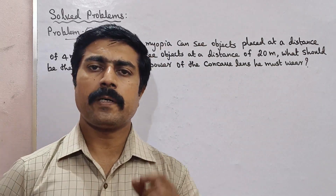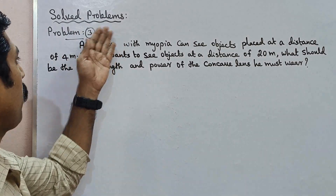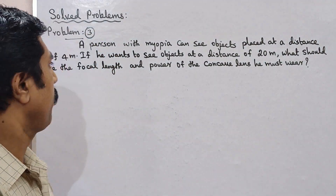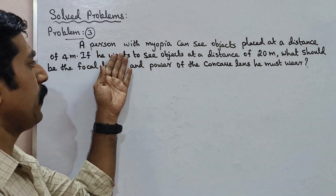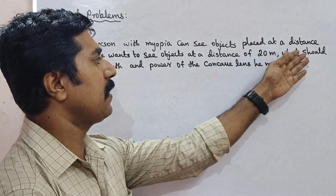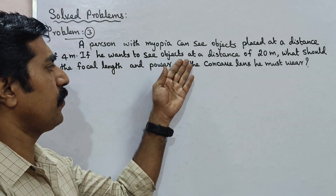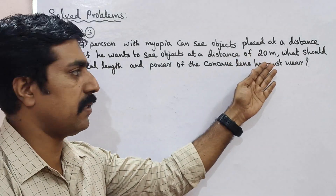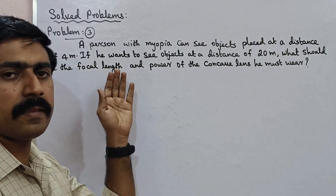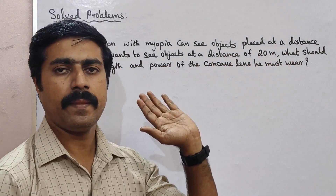Hi students, now we have a very simple problem. See the question: a person with myopia can see objects placed at a distance of 4 meters. If he wants to see objects at a distance of 20 meters, what should be the focal length and power of the concave lens he must use?